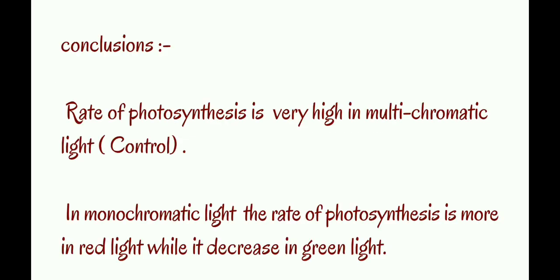Conclusion: The rate of photosynthesis is very high in multichromatic light, i.e., white color. In monochromatic light, the rate of photosynthesis is more in red light while it decreases in green light.